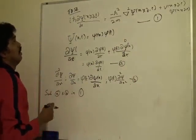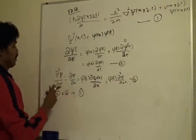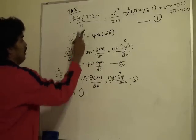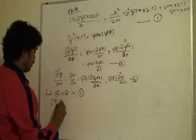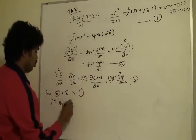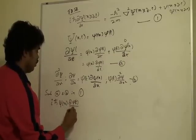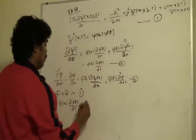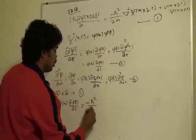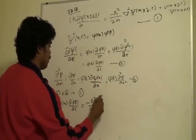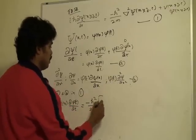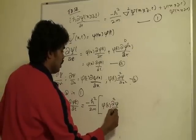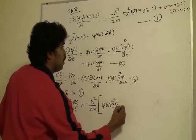So here i ℏ then ψ of x ∂φ of t by ∂t equal to minus ℏ² by 2m.